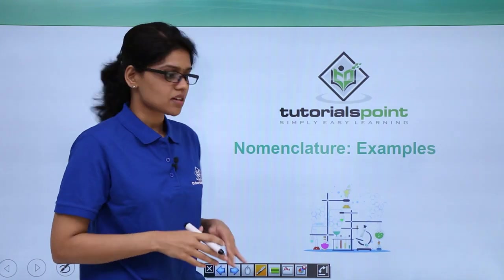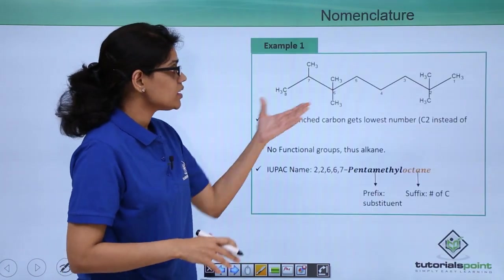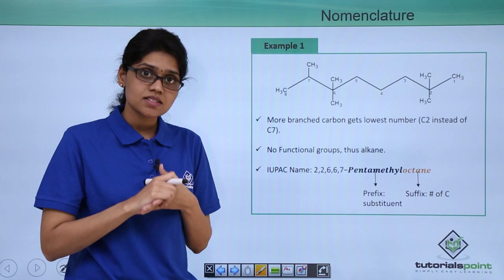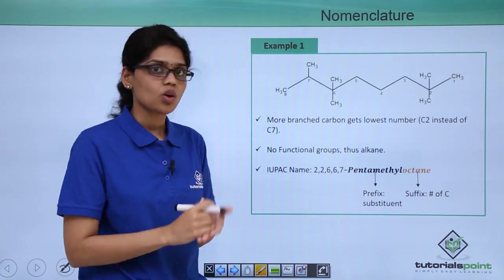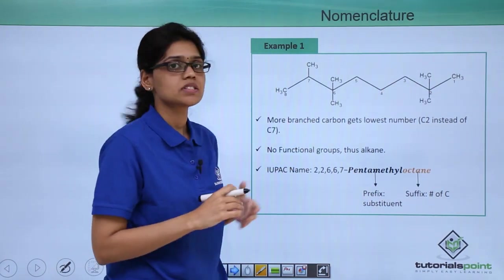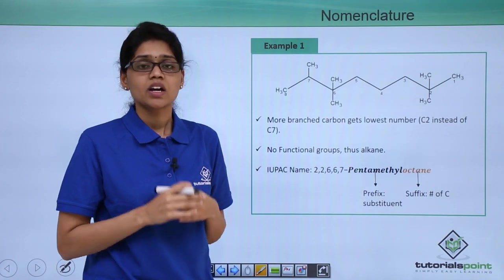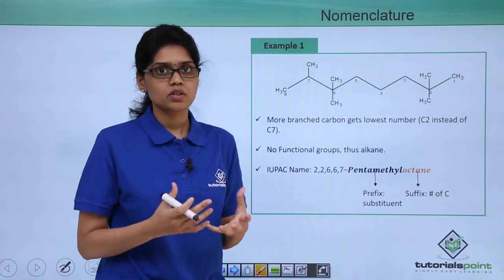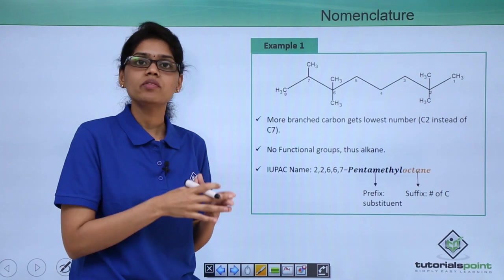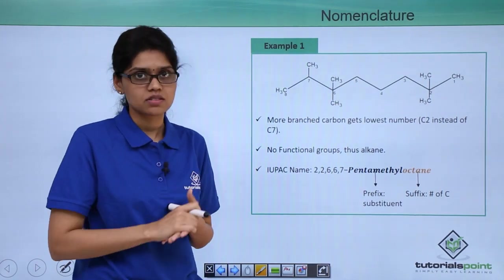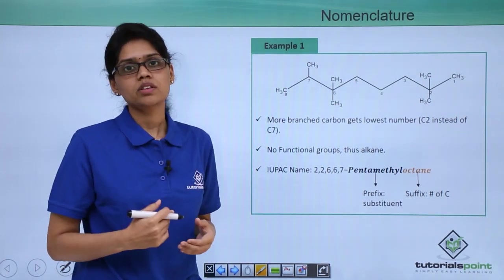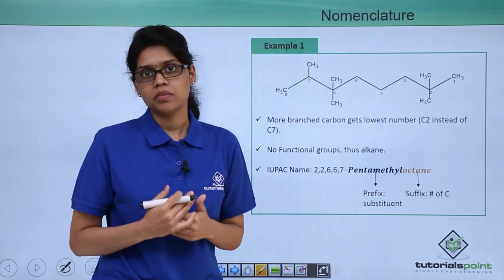Let's go to the first example. Here we have a structure and we can see that the parent chain or the longest chain is this one which has 8 carbon atoms. Essentially there is no principal functional group or any other functional group and all we have is alkyl substituents or branches.